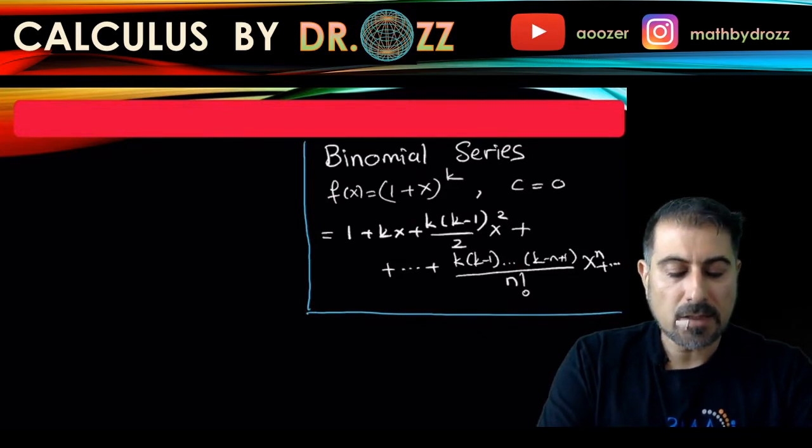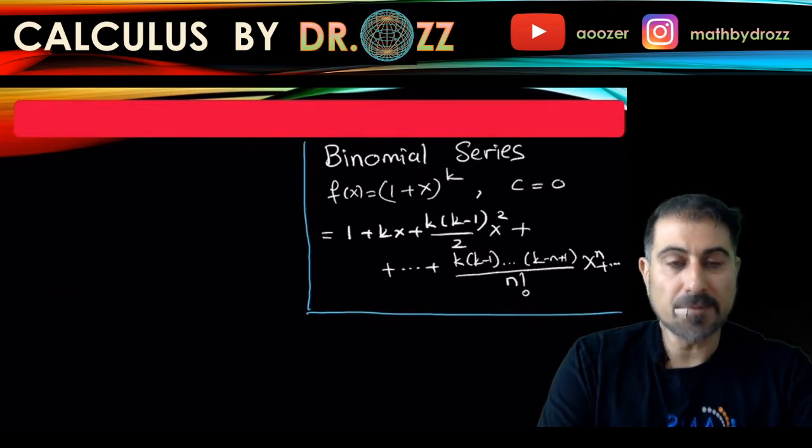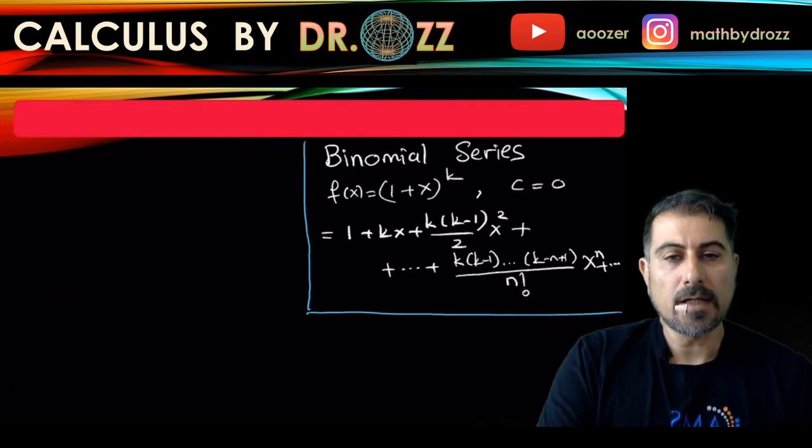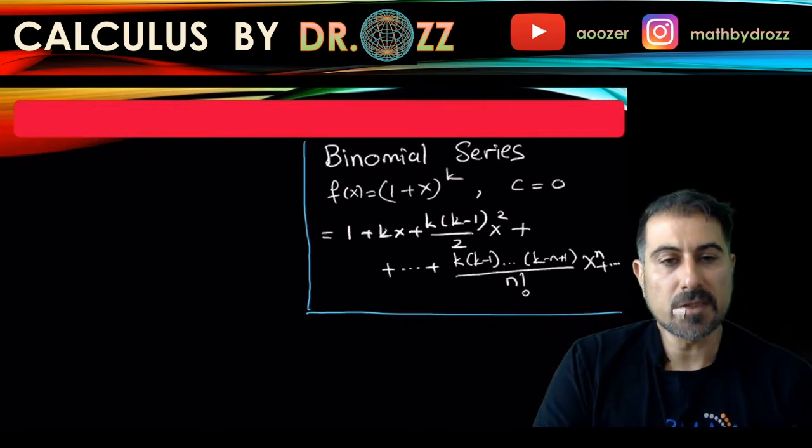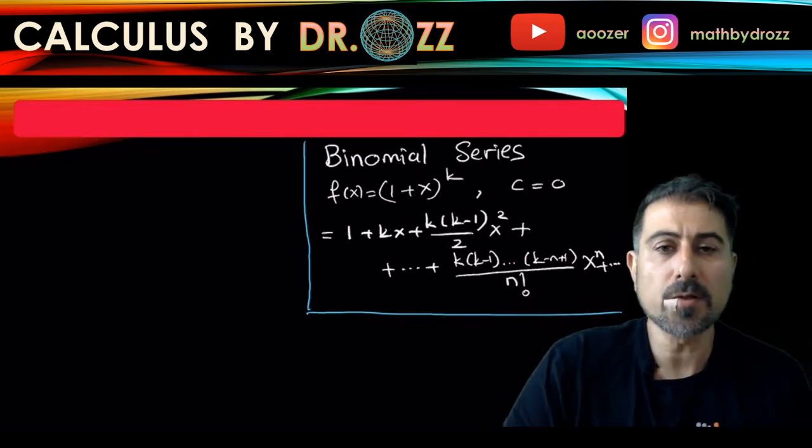You can try this out by yourself. Just look at f(0), f prime of 0, and the nth derivative of 0, and then you will see this nice binomial form.